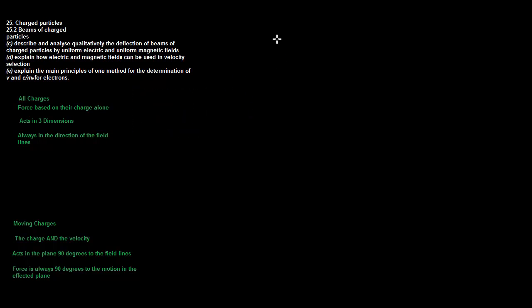For scientific experiments, we often want charged particles of a really specific velocity. That's very difficult because the particles are so small we can't manipulate them directly. But we use these field properties: in the electric field, the force is based on charge alone, and in the magnetic field, the force is based on charge and velocity.